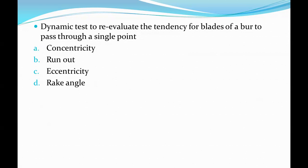Next question: the dynamic test to evaluate the tendency for blades to pass through a single point — options are: concentricity, run out, eccentricity, rake angle. The correct answer is Option B, run out.